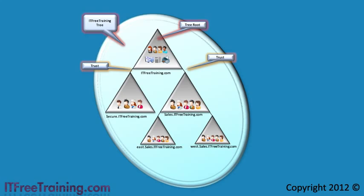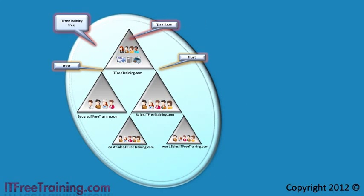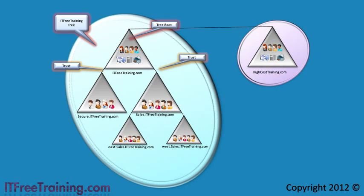The next question is: what would happen when you add another domain that has a different namespace to the other domains? For example, if I added the domain HighCostTraining.com. When this happens, the new domain HighCostTraining will be part of a new tree. I now have two trees: the ITFreeTraining tree and the HighCostTraining tree.